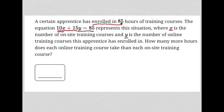How many more hours does each online training course take than each on-site training course? The fact that we have 10 times x, where x is the number of on-site training courses, means that each of those courses must be 10 hours. Because the unit we're dealing with in this equation is hours, since our 85 is representative of the total number of hours.